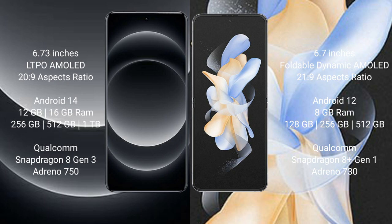The Xiaomi 14 Ultra comes with 12GB or 16GB RAM and 256GB or 512GB or 1TB internal storage. It is powered by a Qualcomm Snapdragon 8 Gen 3 processor with an Adreno GPU and Dino 750.